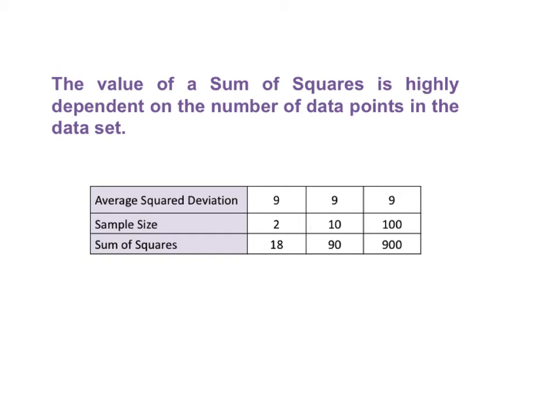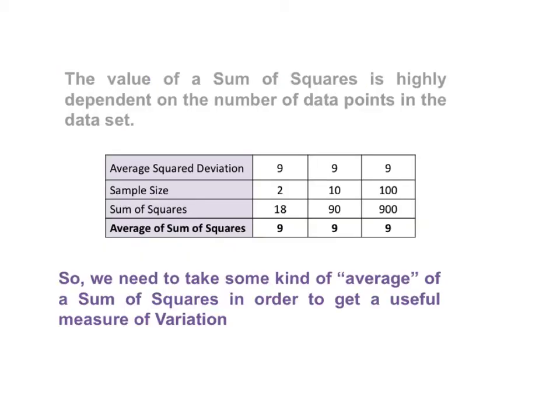Now, how do we get rid of this distortion caused by the size of the data set? We need to take some kind of average of a sum of squares in order to get a useful measure of variation. Note that we said average, not mean. There are different kinds of sum of squares, and there are different ways to calculate this average.